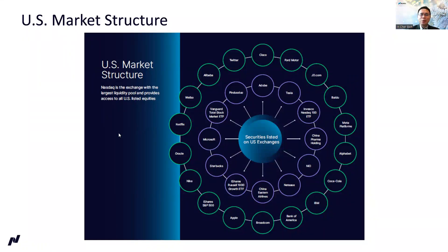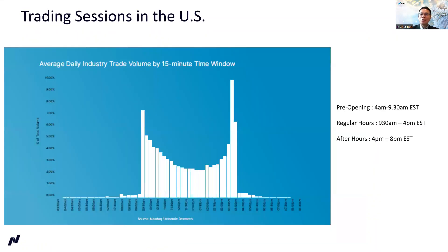As most of you may know, US market trading hours includes pre-opening, regular trading hours, and after hours. There's also an auction period at pre-opening from 9.25am to 9.30am and at pre-close between 3.50pm to 4pm. From the chart, you can see that the majority of the trading volume occurs during the regular trading hours, and this is where the bid-ask spreads are the tightest. More than 90% of the volume occurs during the regular trading hours. It's like suddenly everybody wakes up at 9.30am and started trading and went to sleep at 4pm after market close. Essentially, this is what the chart is showing.